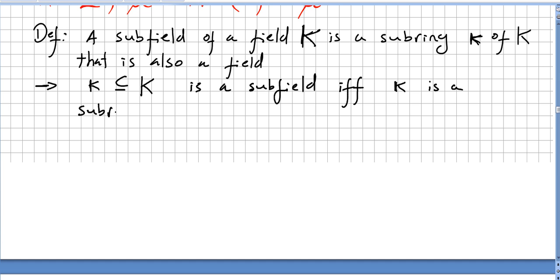is a subring closed under inverses. So a subset k of a field K is a subfield if and only if small k is a subring closed under inverses.